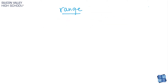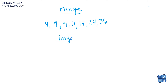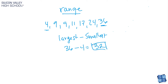Range is also relatively easy to find. Given a data set in order — four, nine, nine, eleven, seventeen, twenty-four, thirty-six — all you do for range is take the largest value minus the smallest value. So thirty-six minus four equals thirty-two. The range is thirty-two. That's valuable because it tells you how big a span your data covers.